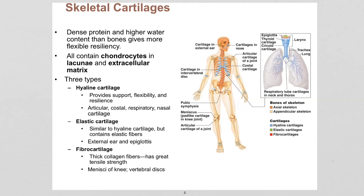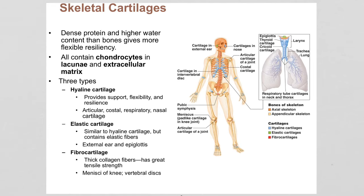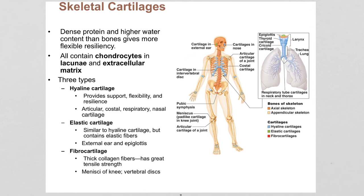This is a review for exam 4 over the skeletal system. My plan for the video is to go through information for the lecture part of the exam. The anatomy we've gone through in class is spelled out and labeled pretty clearly in the notes, so I'm going to leave that for you to work on your own — it's easier with unlabeled images or using the real bones in the classroom.